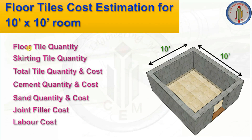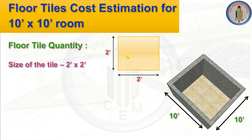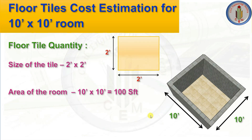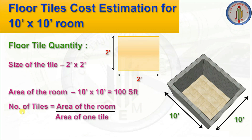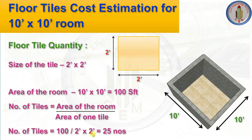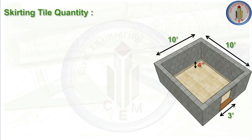Let's start with the floor tile quantity. The size of the tile is 2 feet by 2 feet — a square tile. The area of the room is 10 feet by 10 feet, which is 100 square feet. Number of tiles = area of room ÷ area of one tile = 100 ÷ (2×2) = 25 numbers. So 25 tiles of 2 feet by 2 feet are required to fill the floor.